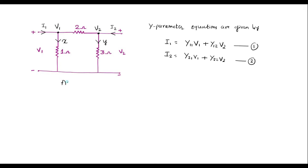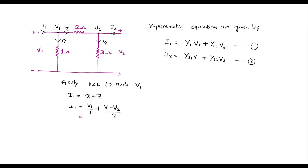Applying KCL to node V1 — incoming current equals outgoing current. Let the current through this branch be z. So I1 is equal to x plus z, where x is (V1 minus V2) divided by 2. Simplifying, I1 equals 1.5·V1 minus 0.5·V2. Let me call this equation 3.